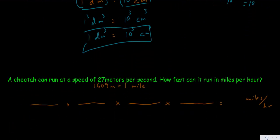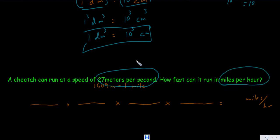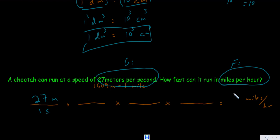Let's try another problem. A cheetah can run at a speed of 27 meters per second. How fast can it run in miles per hour? We're given 27 meters per second — meaning 27 meters over one second — and we want to find the number of miles per hour, or miles over hours.